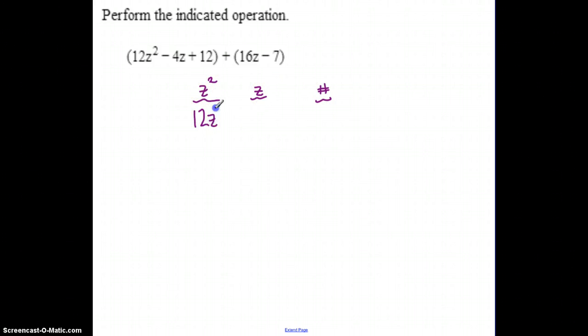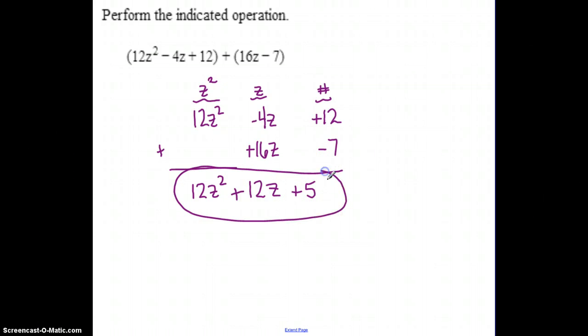So 12z squared, minus 4z, and then your positive 12. If I go to this one, negative 16z, oh excuse me, plus 16z, and negative 7. So if I go to put these together, this really has to be about combining each of the columns just like we would do when we were adding. So if I want to add these, that 12z to the second is the only z to the second. This is going to be 12z. And this will give me positive 5. And that's going to be your answer. These columns just help us get like terms together.